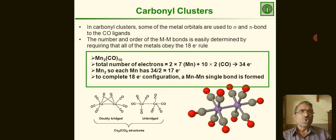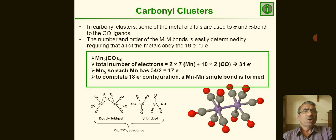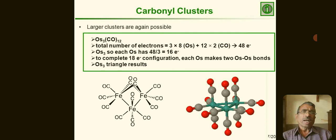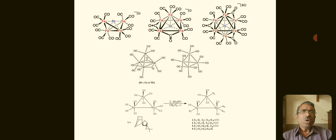To complete the 18-electron count, a manganese-manganese single bond is present, with each manganese contributing 1 electron. So 17 + 1 = 18 electrons. Larger clusters are also possible. Examples shown include triosmium dodecacarbonyl and tri-iron dodecacarbonyl structures, illustrating both low nuclearity and high nuclearity carbonyl cluster structures.